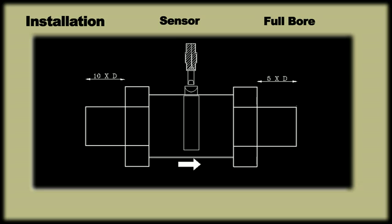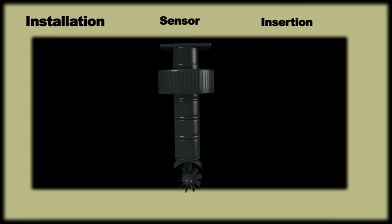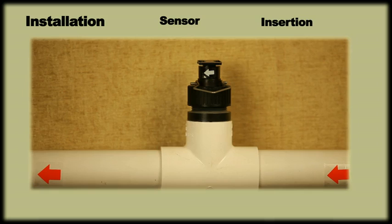Insertion type sensor. Before deciding the location for the placement of the fitting in the pipeline, one should ensure a minimum required inlet and outlet straight run.